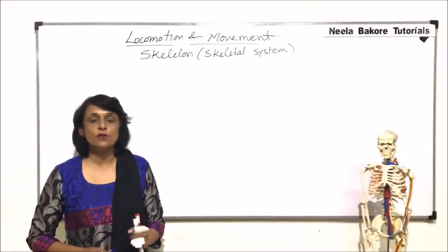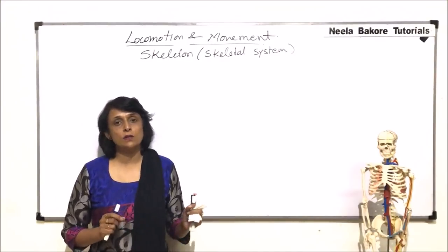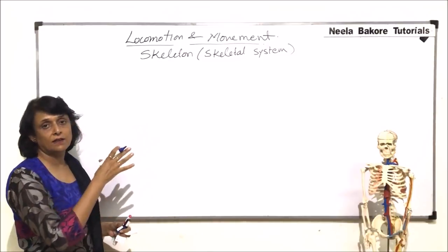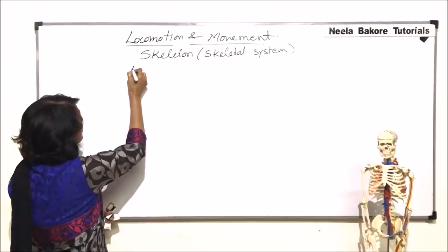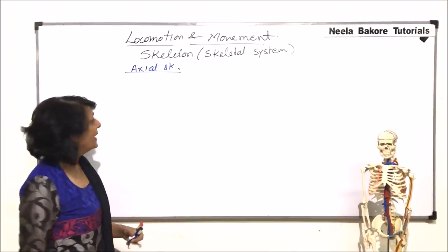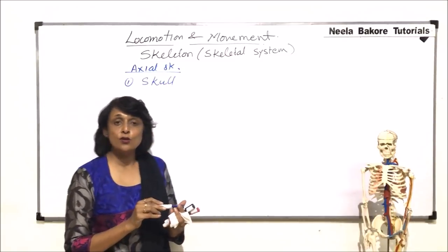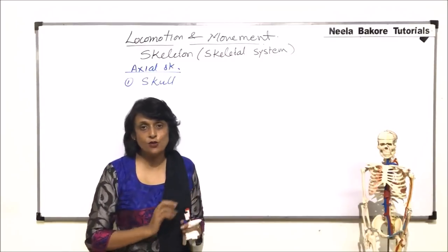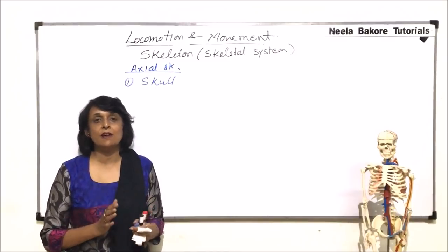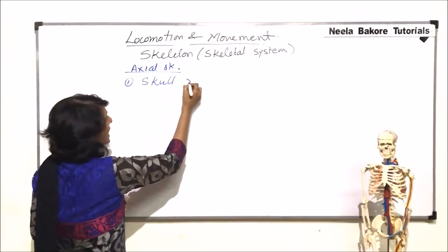In this part we will start with the actual segments. In the previous video we saw how the human skeleton is classified into axial and appendicular. We will now take up various parts of the axial skeleton first and then come to the appendicular. The first part we are going to study is the skull. I have a model so we can see the bones in actual position, but before that we will write down the number of bones, their names, and understand their positions.